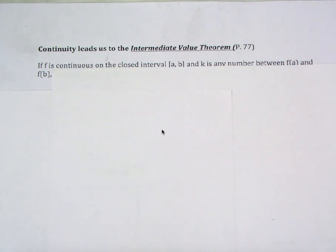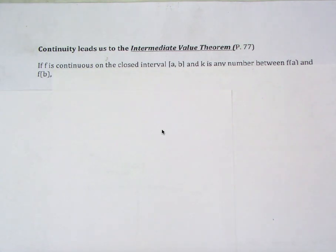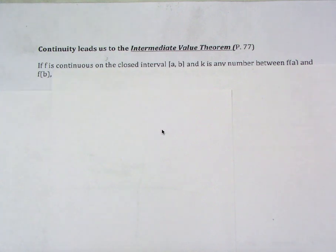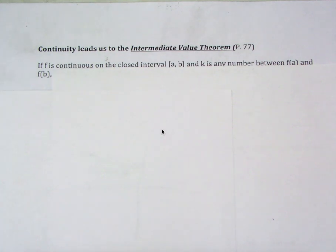So continuity leads us to this theorem called the Intermediate Value Theorem. And just like in geometry where you had to do proofs and you had to know the names of the theorems — you guys had to know the names of them, then you had to know what they said, and then you had to use them in your proofs, like the vertical angles theorem.